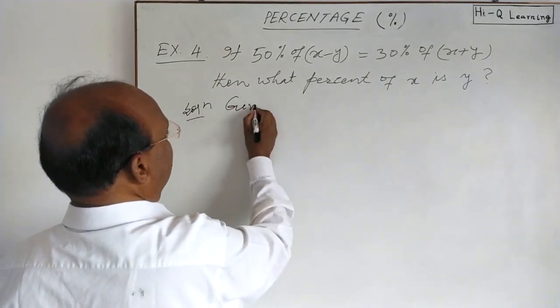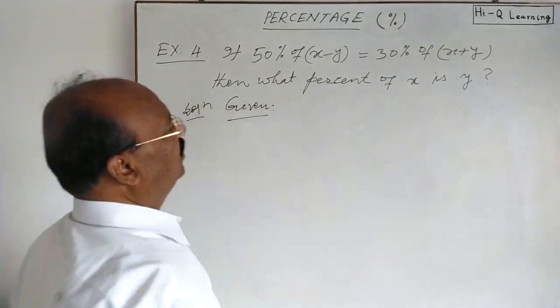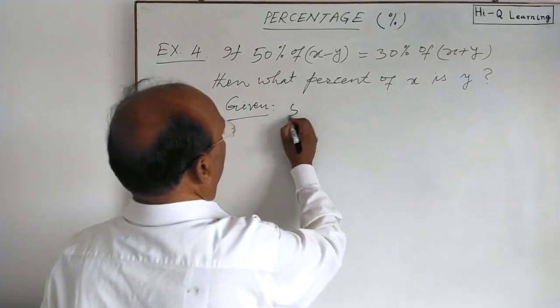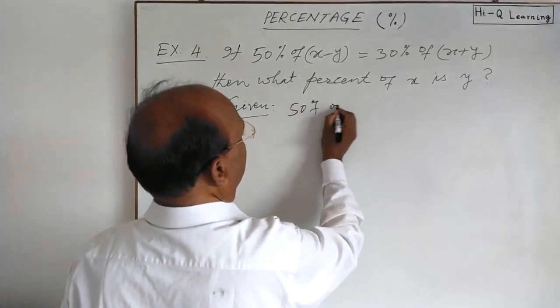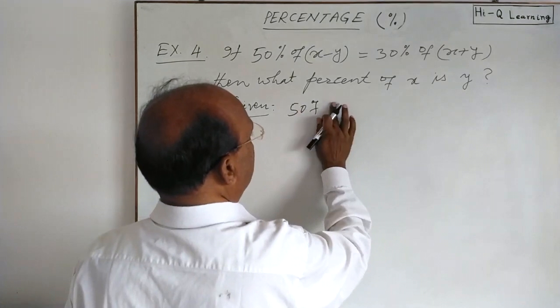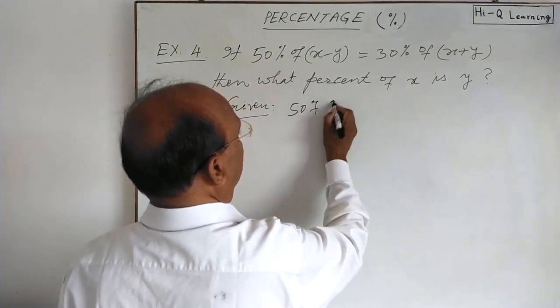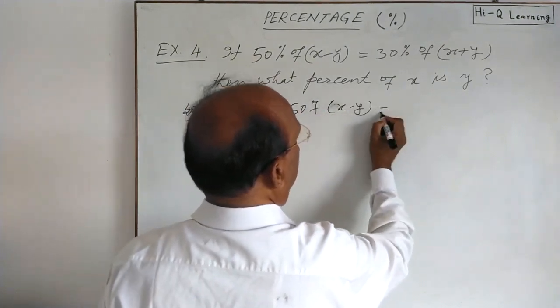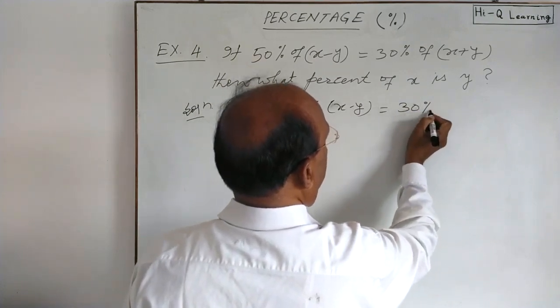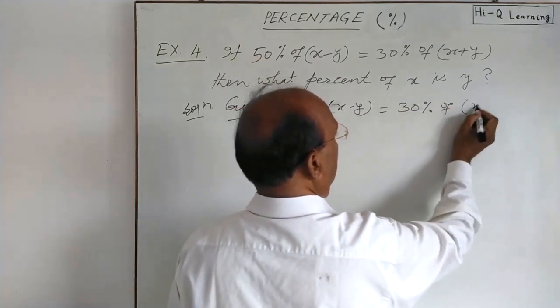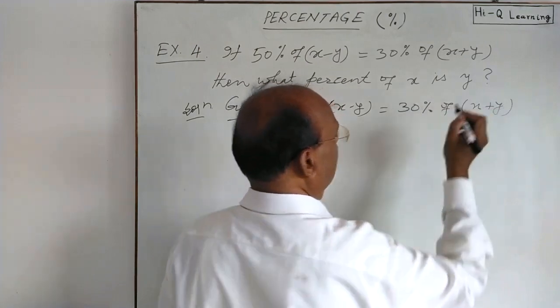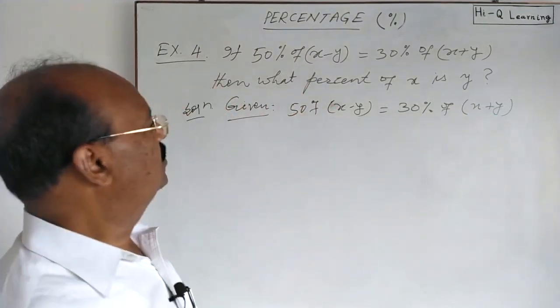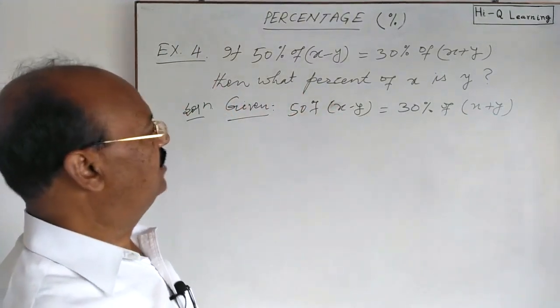Here first of all, let us see what is given. We are given 50% of x minus y is 30% of x plus y. So as we have discussed in the previous videos also,